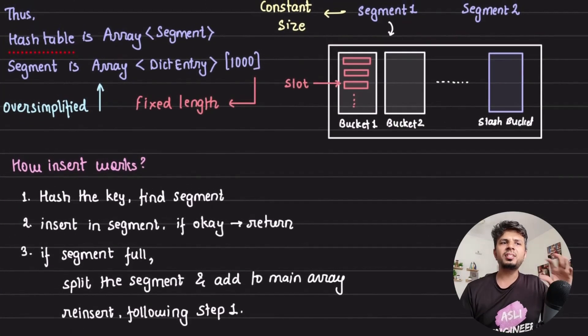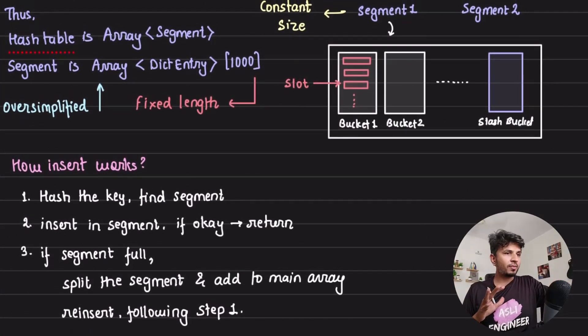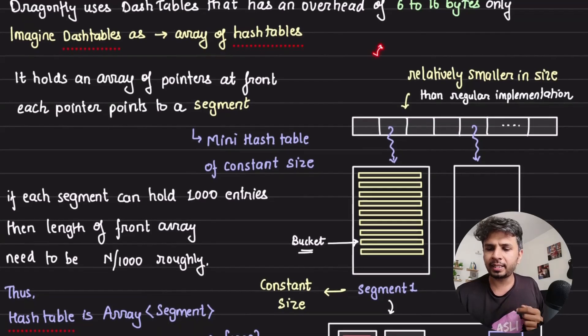Now how does insert work? The insert works in a very simple way. When I want to insert in my dash table, I would take the key, hash it, find a segment where it needs to go to. Basically take the key, hash it, figure out where it needs to go to.